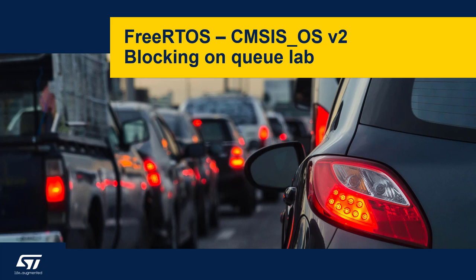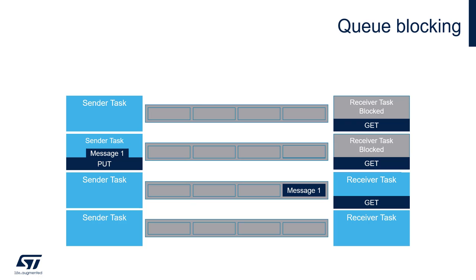Hello, let's do some more advanced exercise on queues using two senders and a blocking mechanism. Here we can see in illustration how a task can be sent to the blocked state when accessing the queue. In this example we have the following components: a queue with length of four elements the same size, a sender task and a receiver task which executes first.